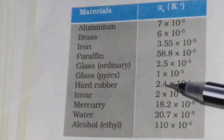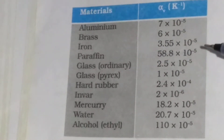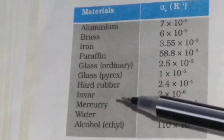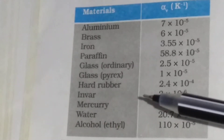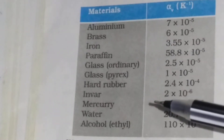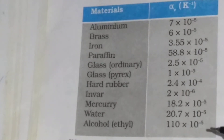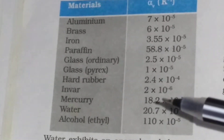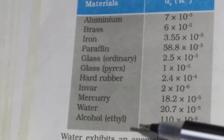In this table, the coefficient of volume expansion alpha V for some substances in the temperature range 0 to 100 degrees centigrade is shown. Invar, which is an alloy of iron and nickel, has a very low value of alpha V: 2 into 10 to the power minus 6 per Kelvin. For ethyl alcohol the value is 110 into 10 to the power minus 5 per Kelvin inverse, and for mercury the value of alpha V is 18.2 into 10 to the power minus 5 per Kelvin inverse. So you should remember that the value of alpha V for ethyl alcohol is more than mercury.